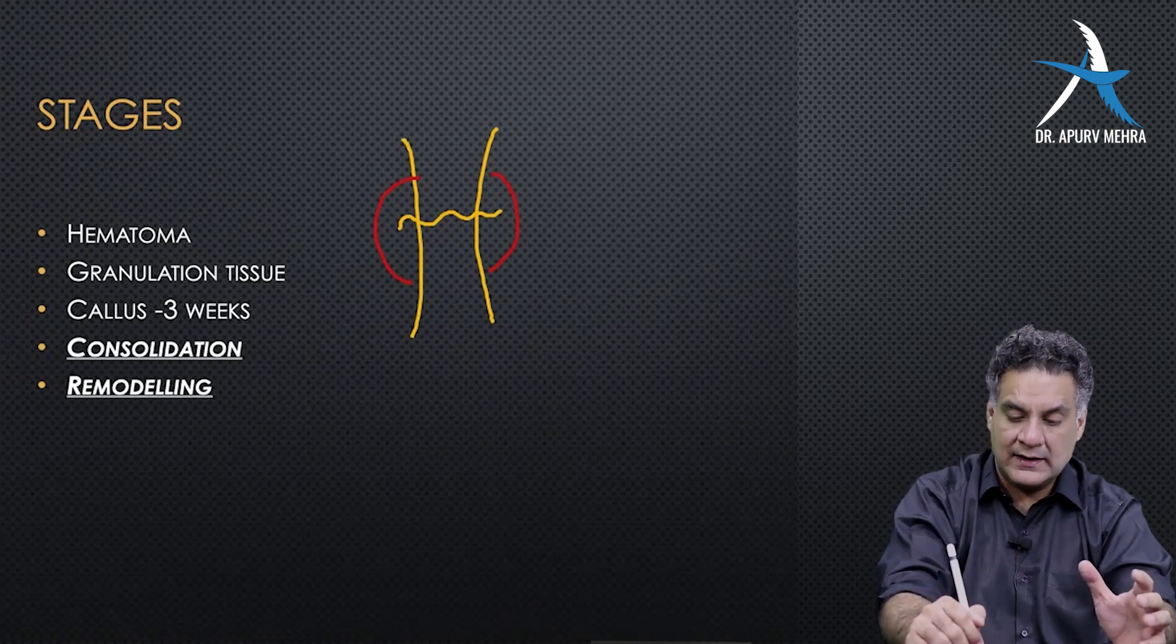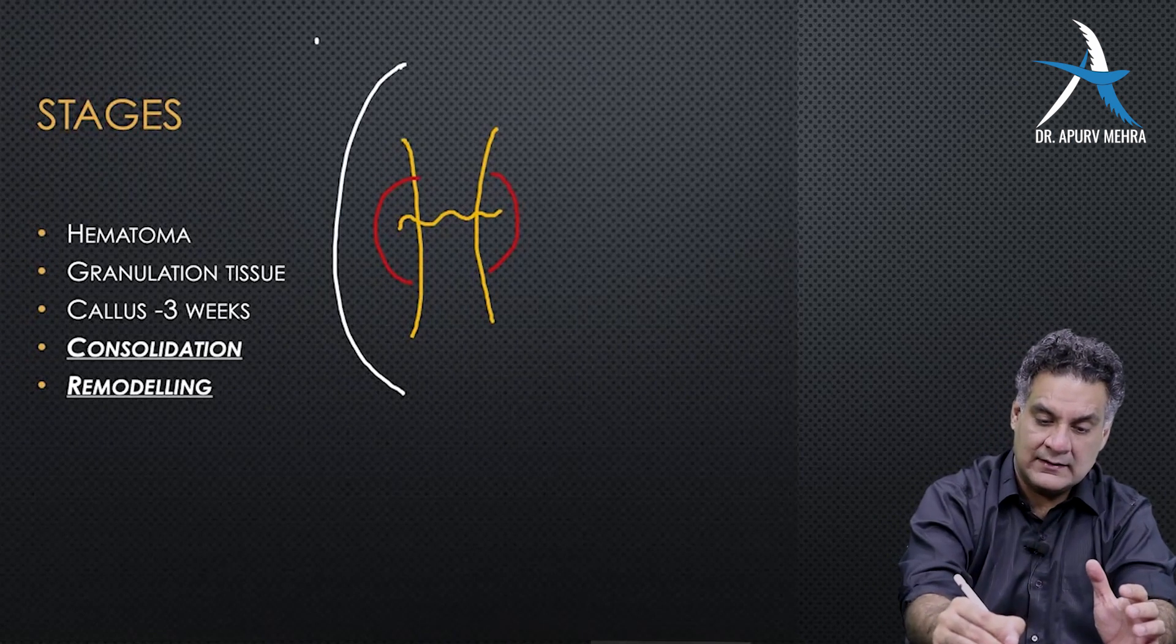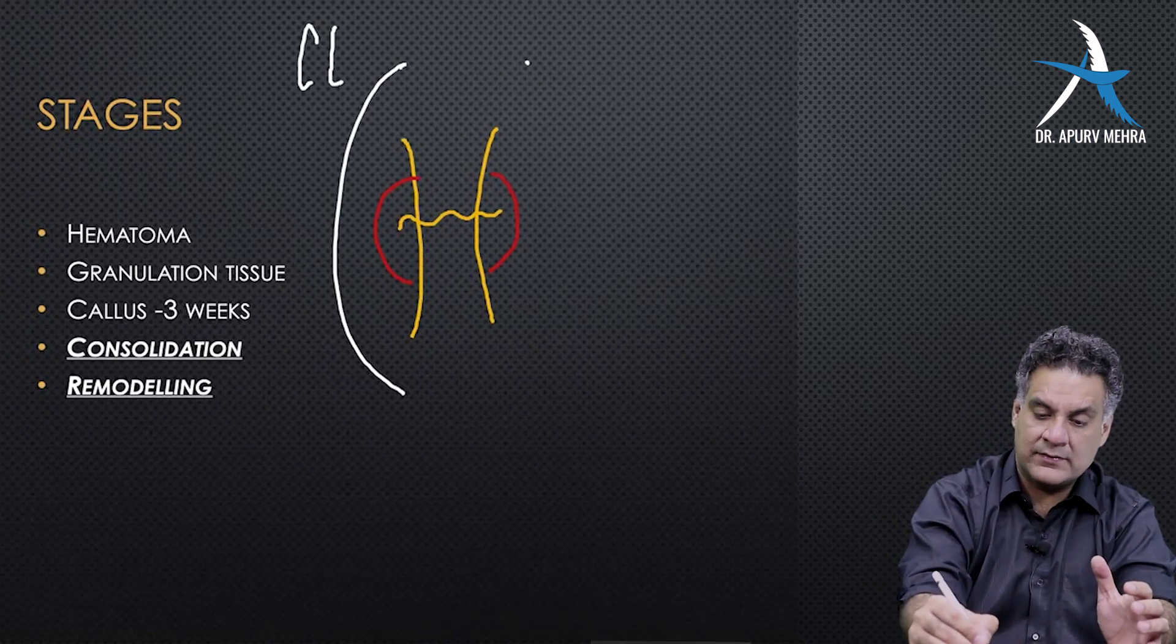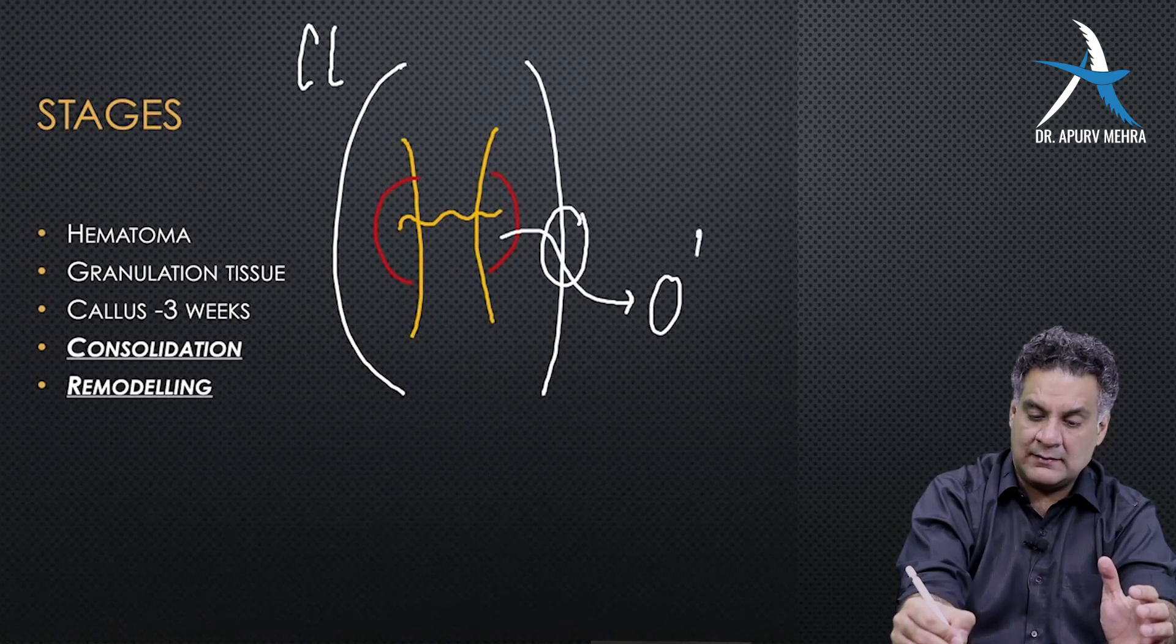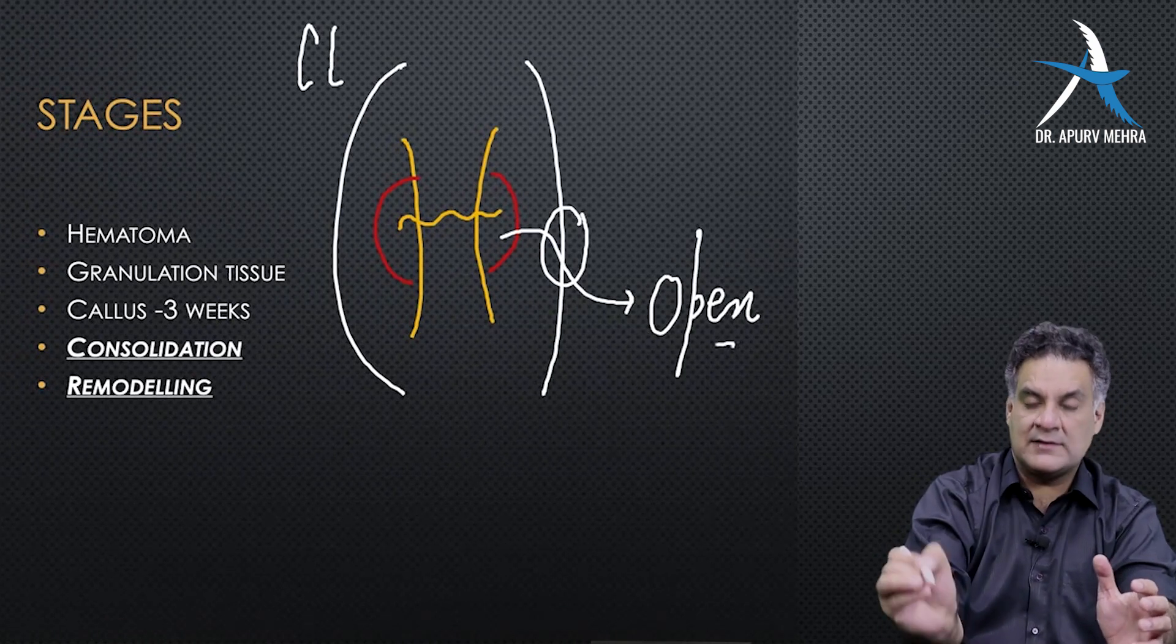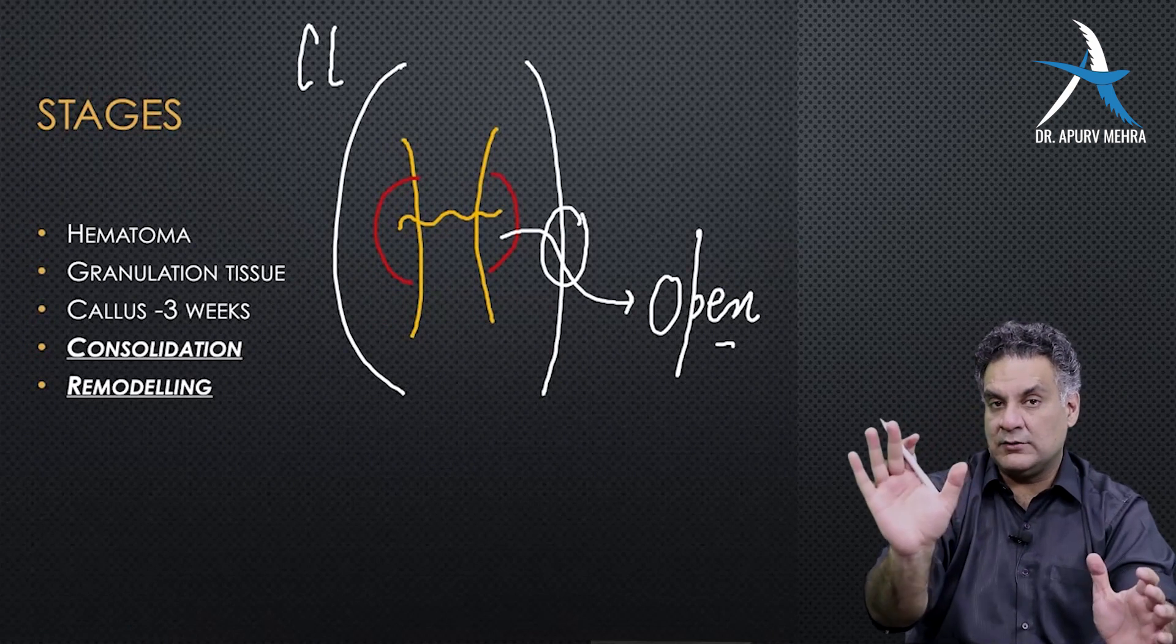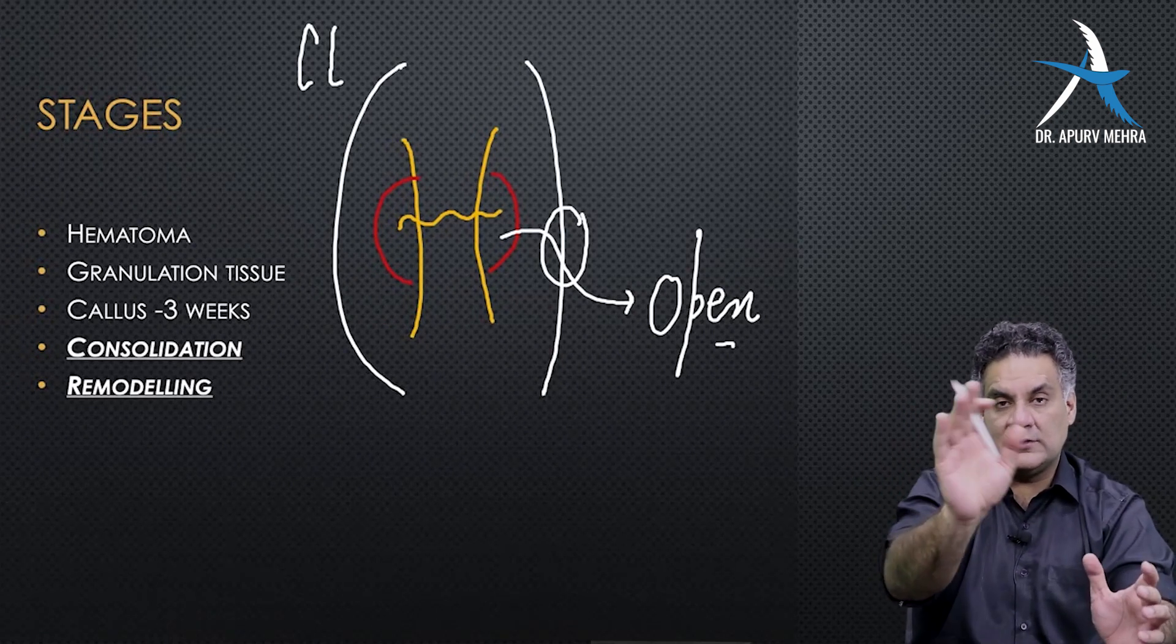If the hematoma is inside the skin, it is a closed fracture. If there is a rent in the skin and soft tissues and hematoma comes out, it is an open fracture. The bone ends need not come out. Even if the hematoma comes out, it means the same.